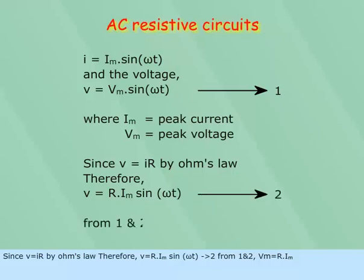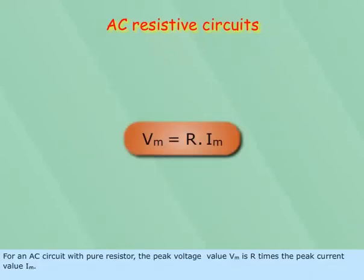From 1 and 2, V_m equals R multiplied by I_m. For an AC circuit with pure resistor, the peak voltage value V_m is R times the peak current value I_m.